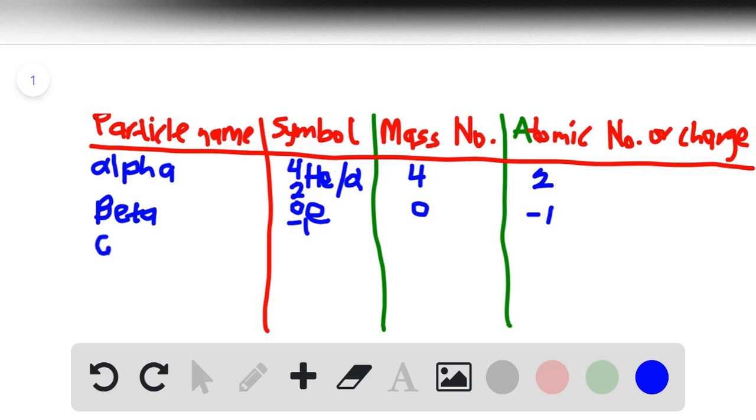So with gamma rays, the symbol is γ, and then the top and down numbers are 0. So the mass number then becomes 0 and then the atomic charge becomes 0.